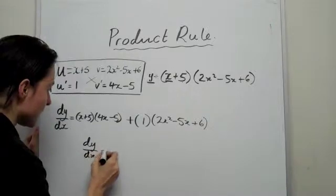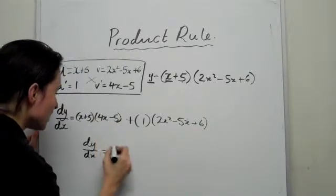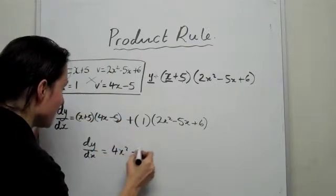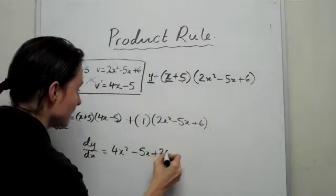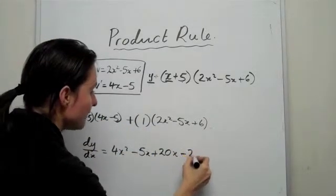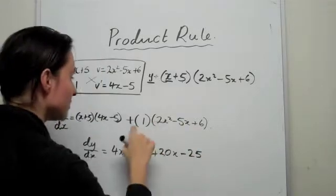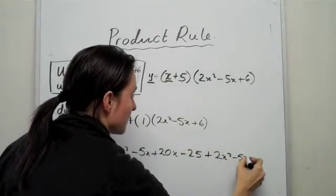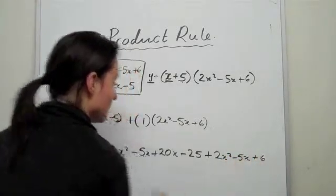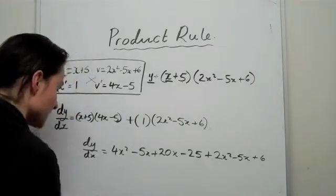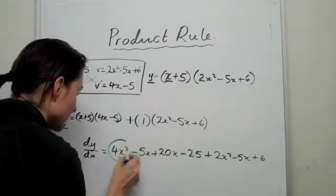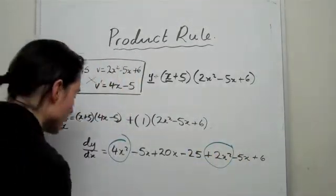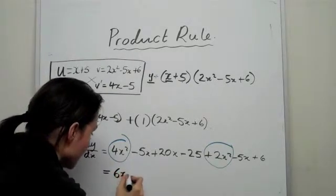So dy over dx becomes, if you just expand this all out, you should get 4X squared minus 5X plus 20X minus 25. And then this is 1 times everything, so it's just basically the same thing.